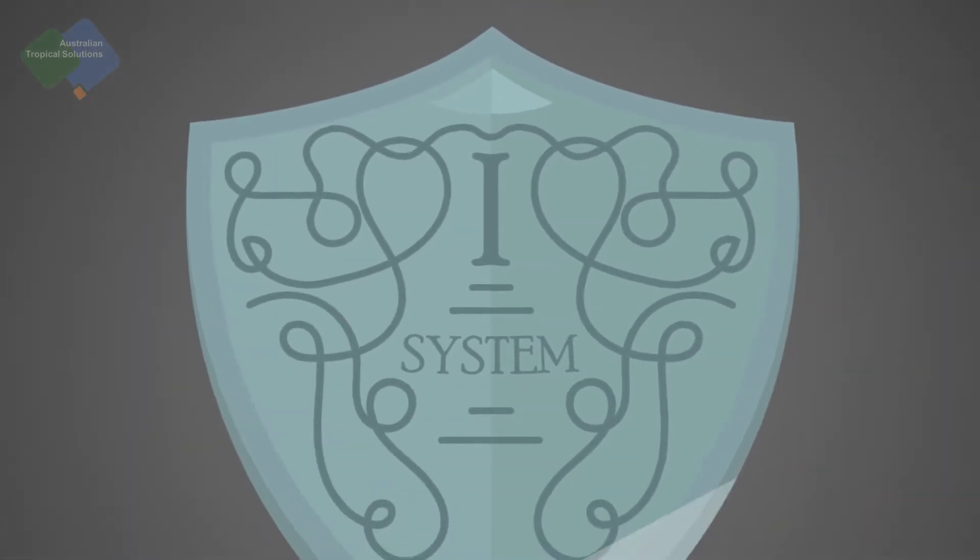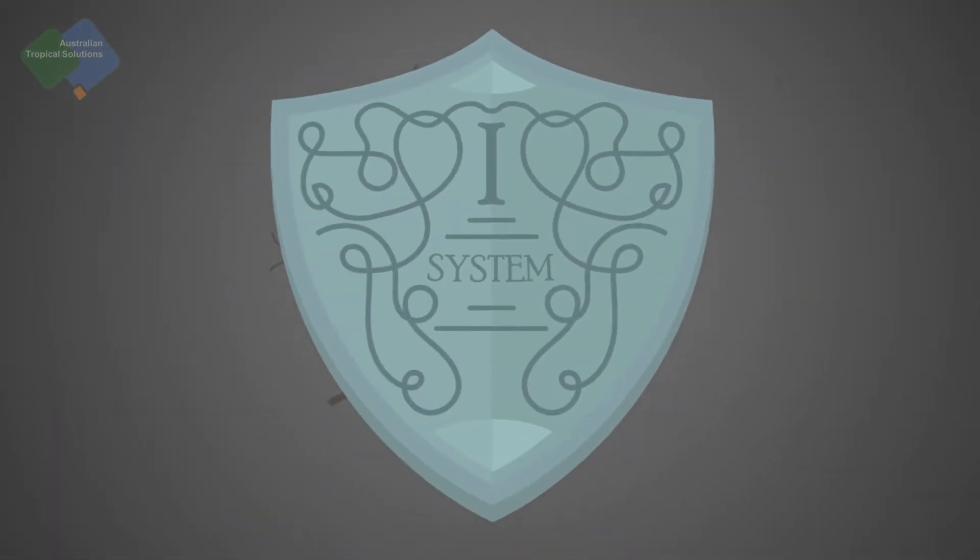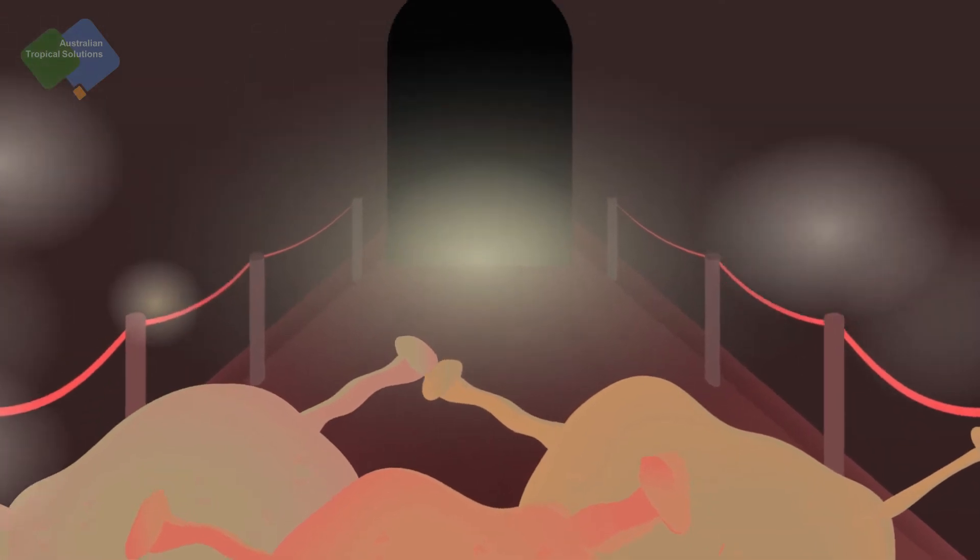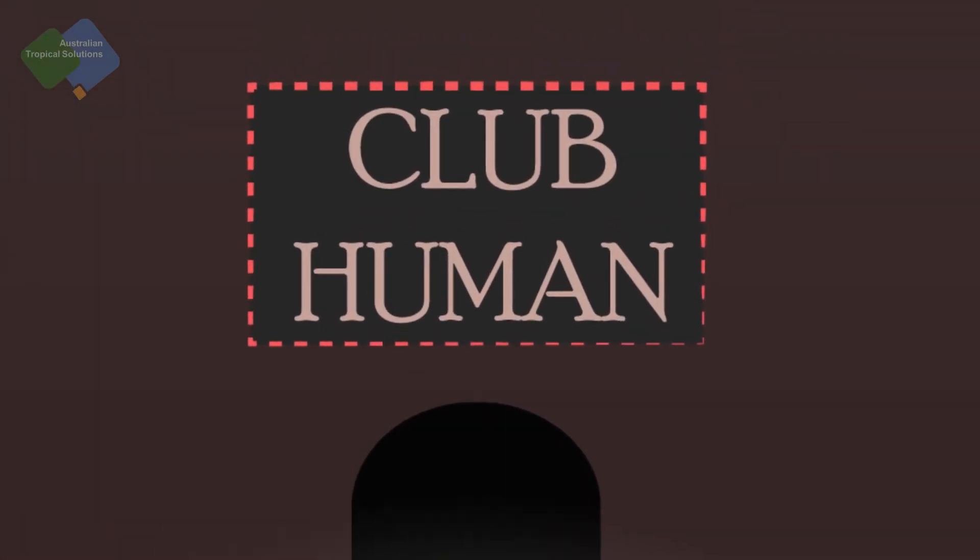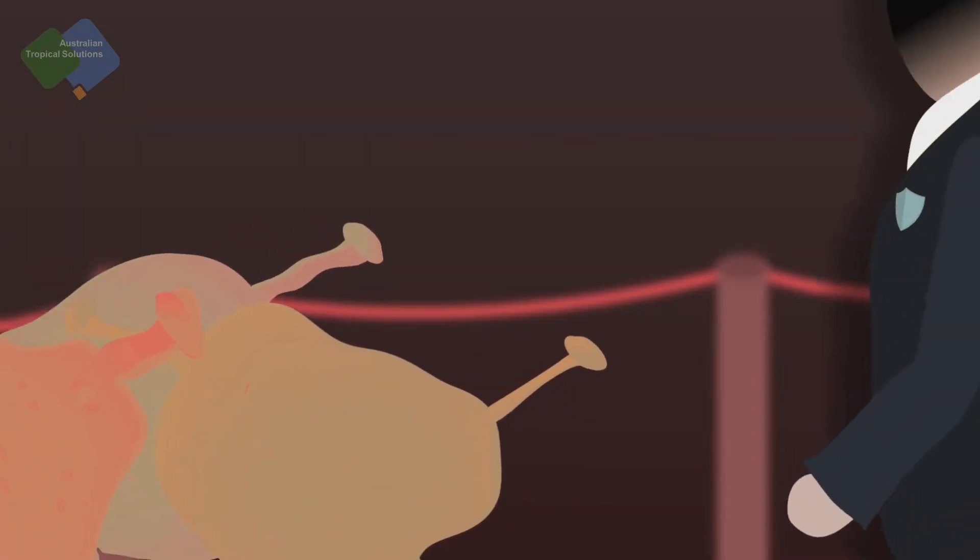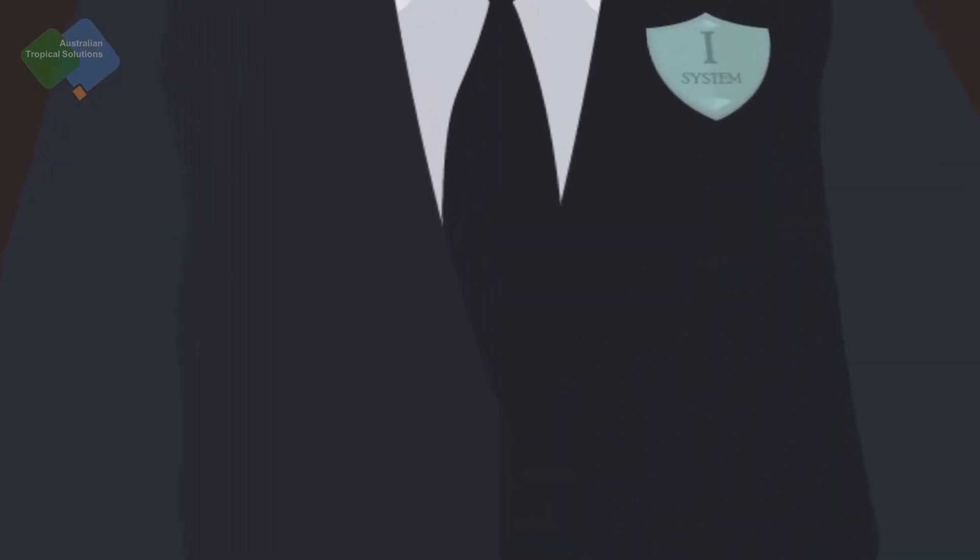The immune system is a complex and fascinating system that protects us from danger. Pathogens are microorganisms that cause disease. The immune system has to act at every level wherever a pathogen could enter and invade the body.